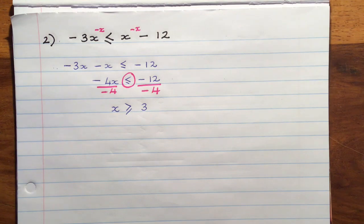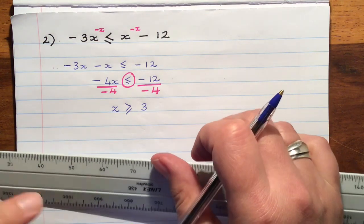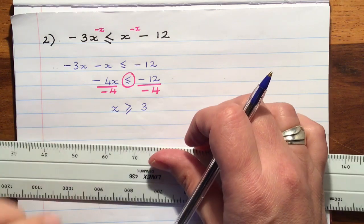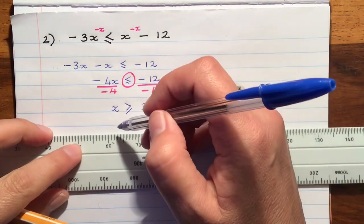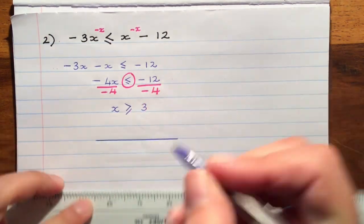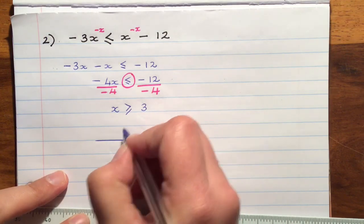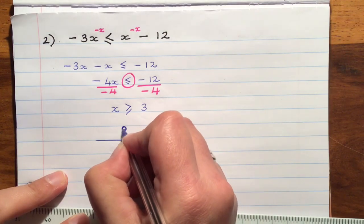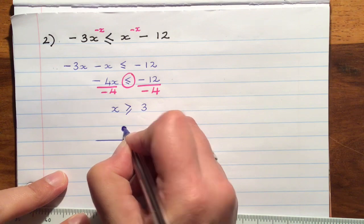So the solution here is all the values of x that are 3 or bigger and it includes the 3. So when we draw our number line, the circle above it is going to be closed. In other words, colored in because it includes the 3.